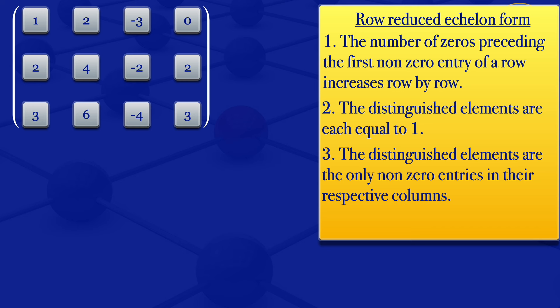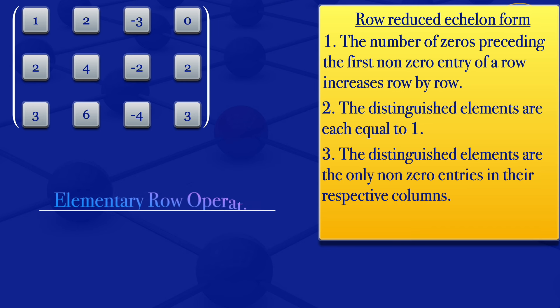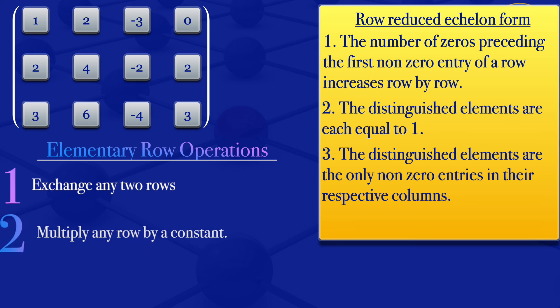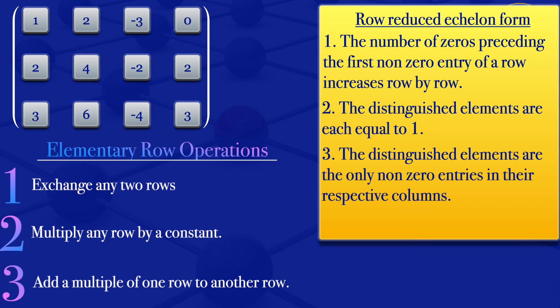So when we have put a matrix which satisfies those three conditions, then it is said to be in row reduced echelon form. So for this given matrix, to put it in row reduced echelon form, we have to use elementary row operations. That is, we can exchange any two rows, multiply any row by a constant, or add a multiple of one row to another.